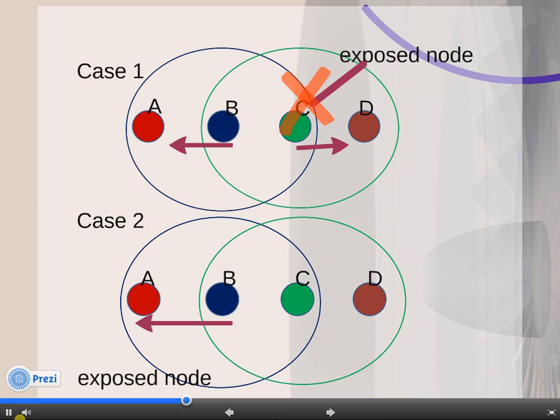Now take case 2. If B wants to communicate to node A, but at the same time node D, which comes in the range of C, starts communication with node C before B starts, then in that case B is the exposed node.